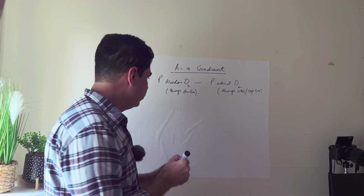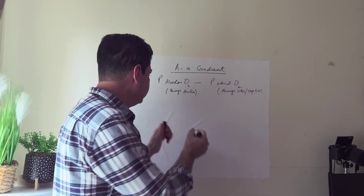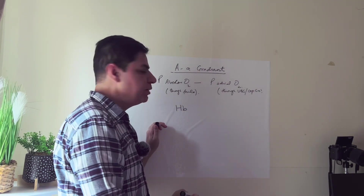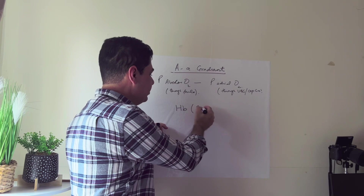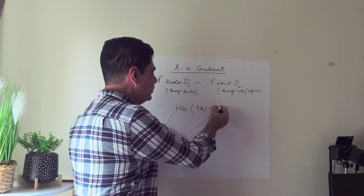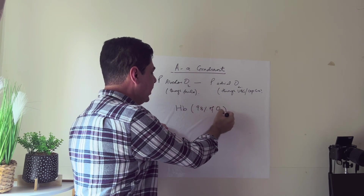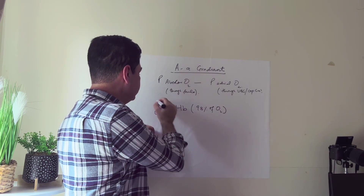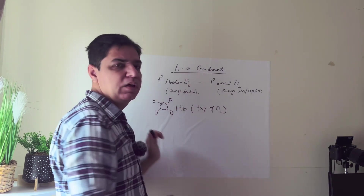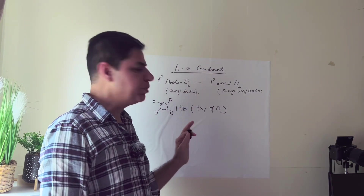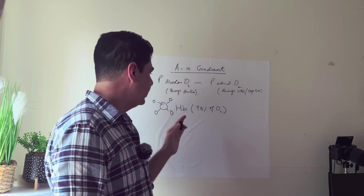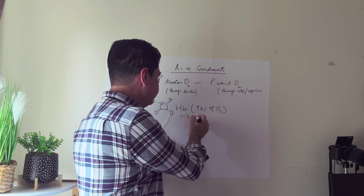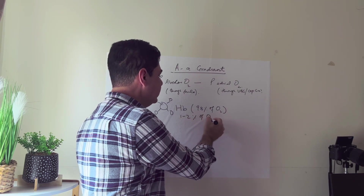Number one is hemoglobin, which carries 98% of the oxygen. Each hemoglobin molecule attaches four oxygen molecules. The remaining 1 to 2% of oxygen is carried in dissolved form in the blood.